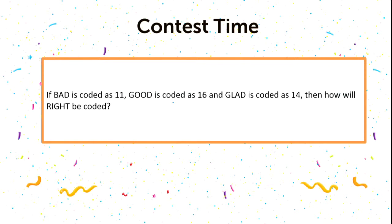Now the contest question for this session: if 'bad' is coded as 11, 'good' is coded as 16, and 'glad' is coded as 14, then how will 'right' be coded? You can solve this question and post the answer in the comment section. I will be discussing the solution in my next reasoning class.